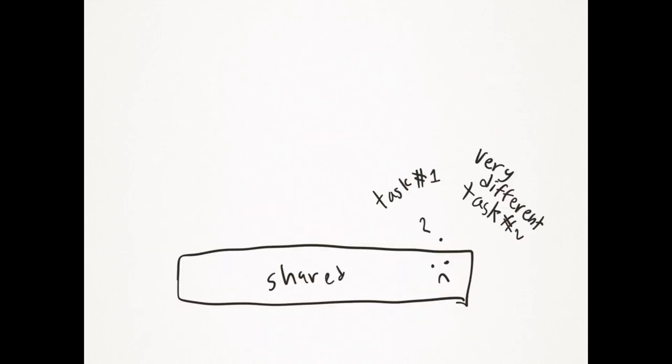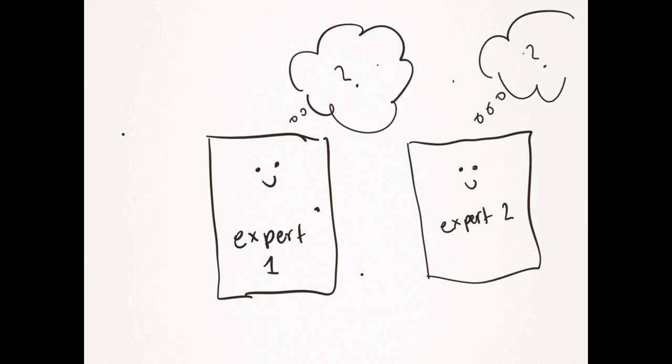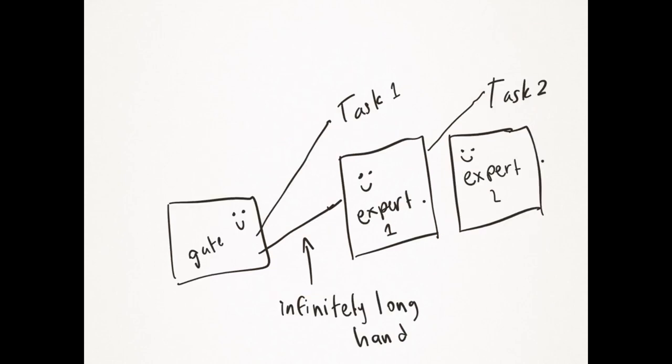Anyways, the expert layers outputs are weighted summed by the gate network and are passed to each of our subtask networks. This is better because there is no shared bottom to be confused with. Instead we have expert models that are particularly attuned to specific tasks, though we don't really know what they are. And a gate network that does that job for us. It determines which expert should do which task.